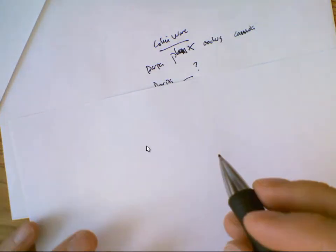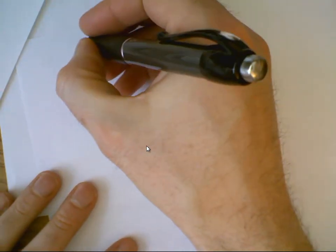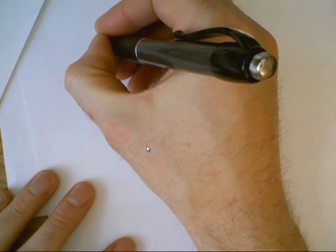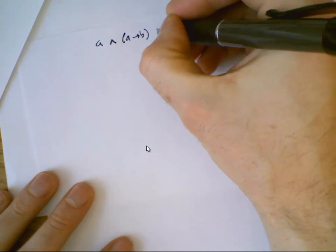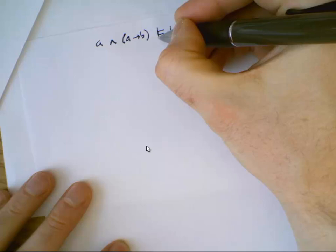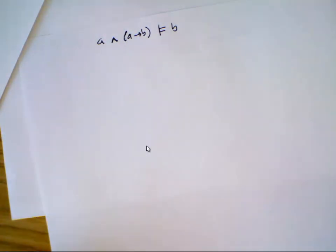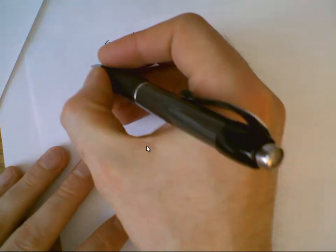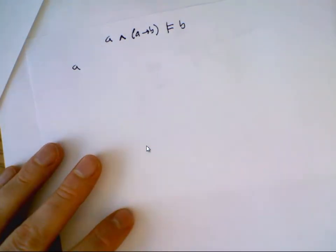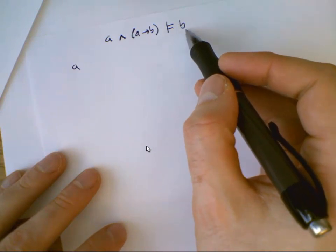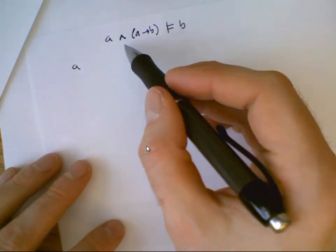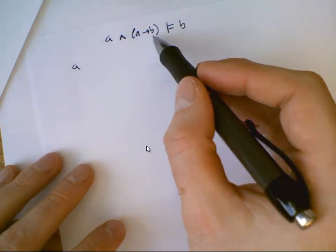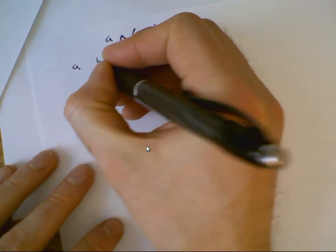Let's say I'm trying to show that if we know A and we know A implies B, does that entail B? Intuitively it should — if we know A and A implies B, then B ought to hold. Entailment is about possible worlds: B is entailed by our knowledge base if it's true in every possible world where the knowledge base is true. The worlds where the knowledge base is true are called its models.